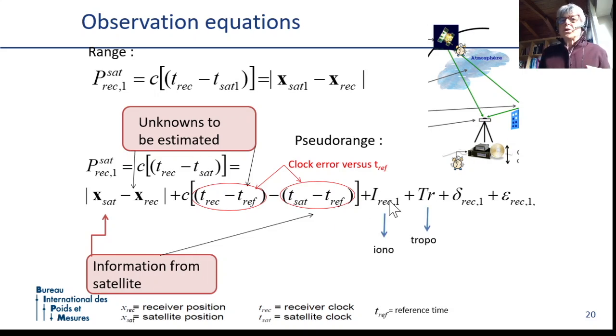And then we have the ionosphere, the troposphere, and other delays which are to be taken into account. So you see the equation becomes a little bit more complex. Again, we need four satellites because we have four unknowns. And we need in some way also to cope with all these other terms: estimate, use a model, measure.